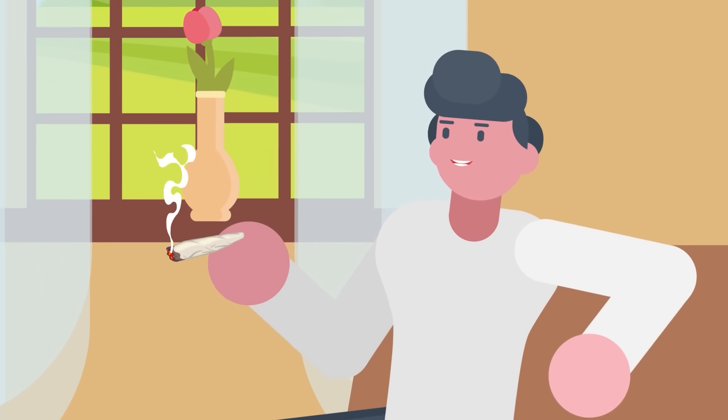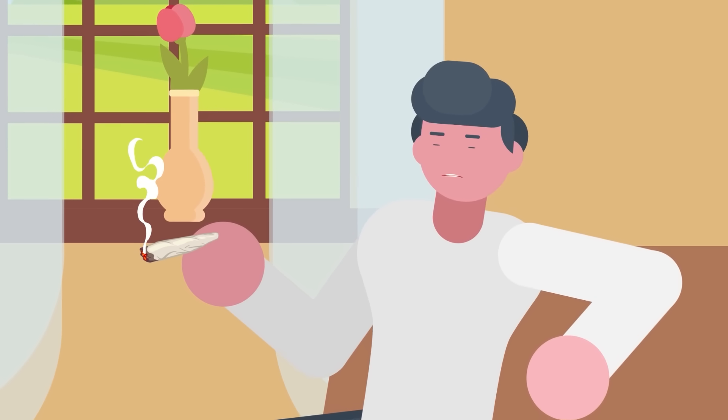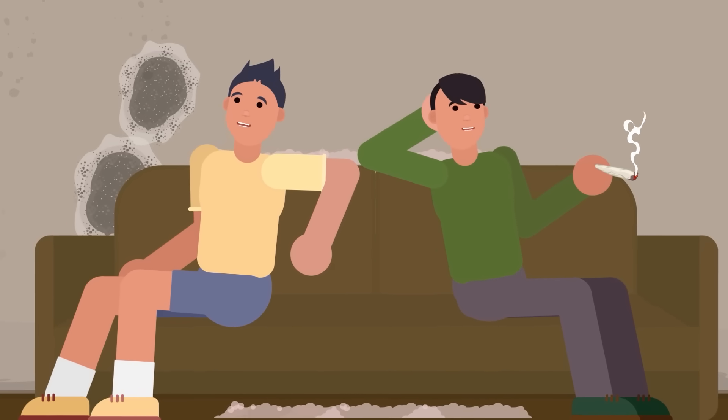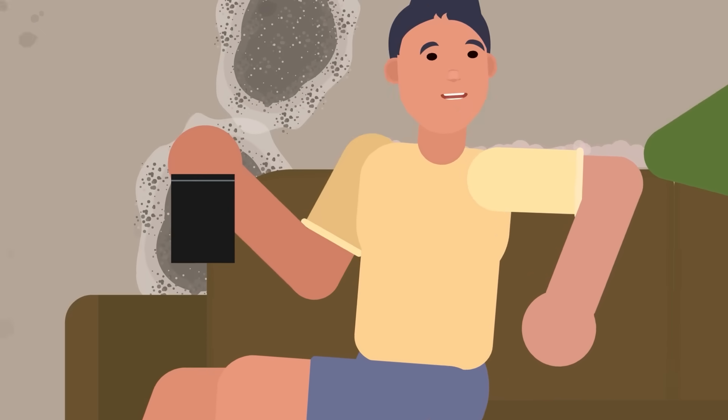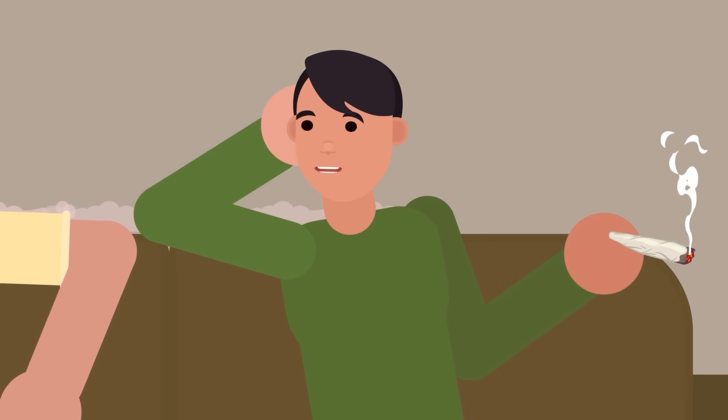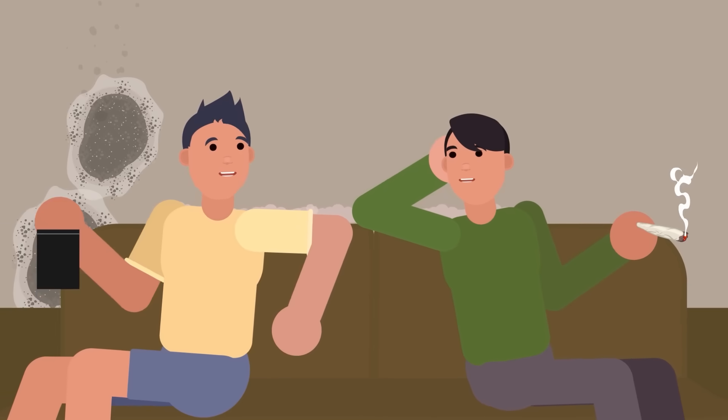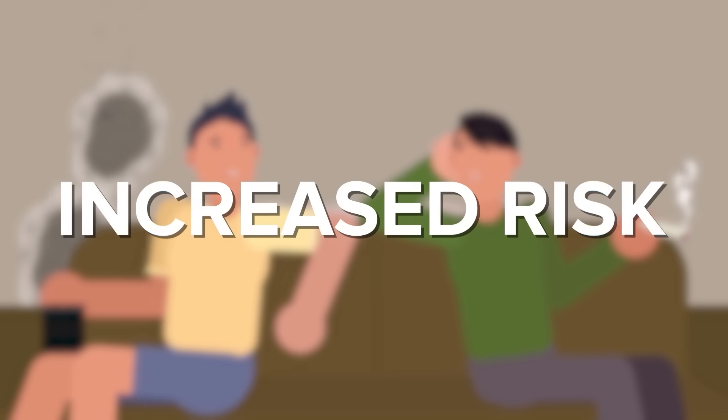Marijuana myth number three. Marijuana is a gateway drug. This one is complex. The majority of marijuana users won't go on to use harder drugs. However, a significant body of research shows a correlation. Those who start using marijuana, particularly as teenagers, are statistically more likely to experiment with other substances later in life. It's not about guaranteeing a progression, but rather acknowledging that there is an increased risk.